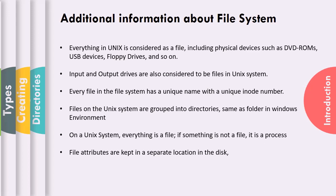Files on the UNIX system are grouped into directories, same as folders in a Windows environment. On a UNIX system, everything is a file; if something is not a file, it is a process. File attributes are kept in a separate location on the disk.